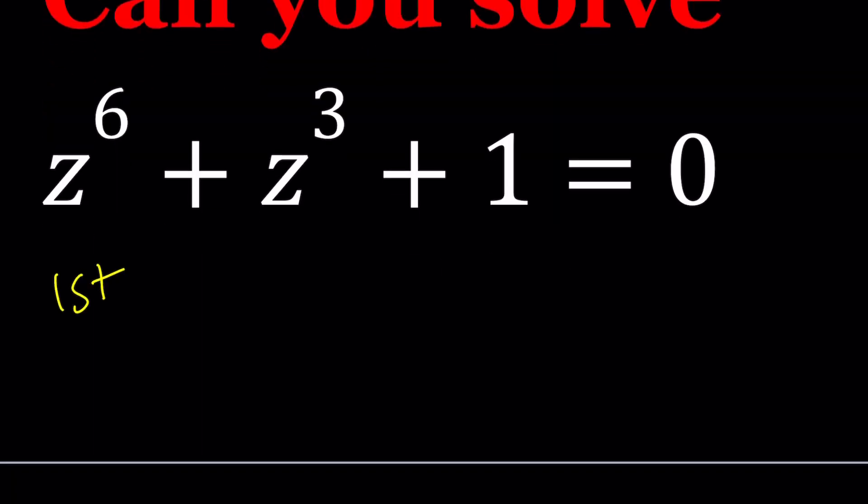If you ever come up with a third method, please let me know in the comment section down below. So for my first method, since I do have the sixth and the third power, this is kind of like a bicubic. We can basically replace z cubed with w, and then z to the sixth just becomes w squared, and we're able to turn this into a quadratic equation, which is nice. So w squared plus w plus one equals zero.